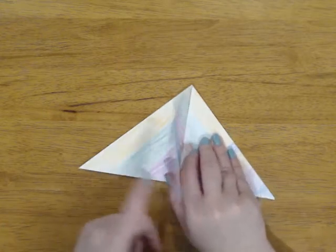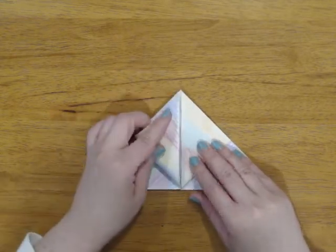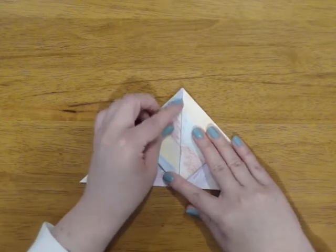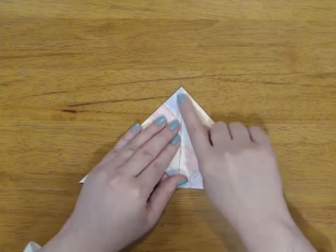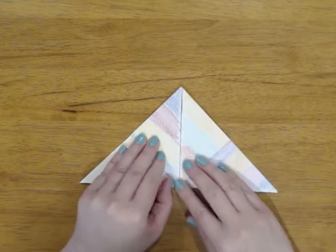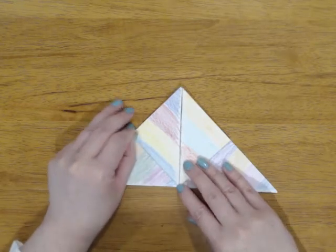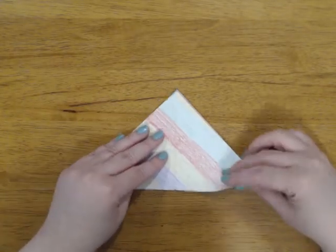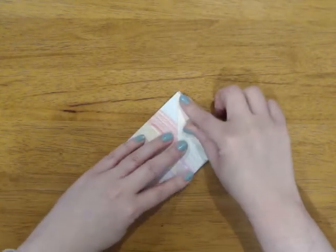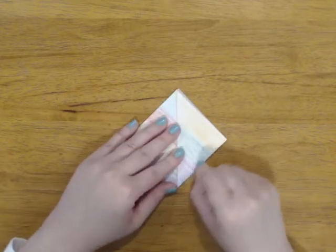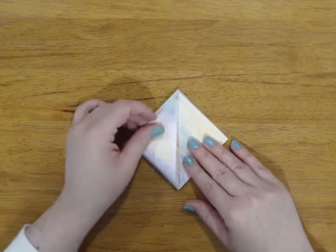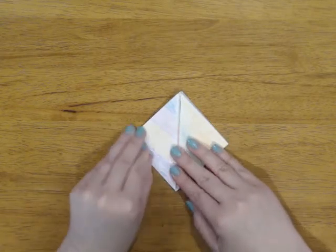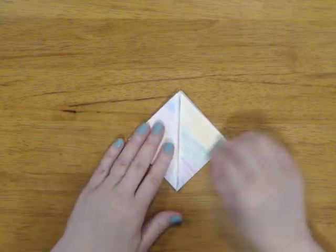We're gonna do the same thing on the other side. Just the front flap. Fold that edge up. And then crease. We're gonna turn it upside down. And we're gonna do the same thing on this side. Fold that edge up. And then crease. Last one. Fold it up. Make sure all those edges line up as good as you can get them. And then crease.